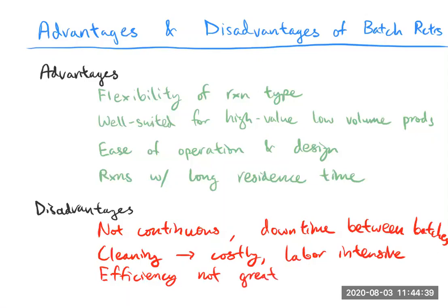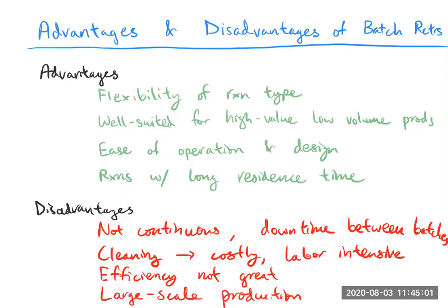If you're really trying to make a large quantity of things and use your time and volume more effectively, batch isn't really the way to do that. Large-scale production is generally more difficult with batch reactors.